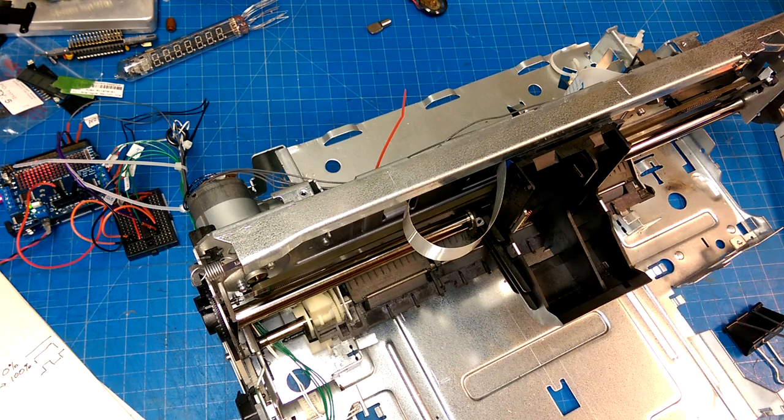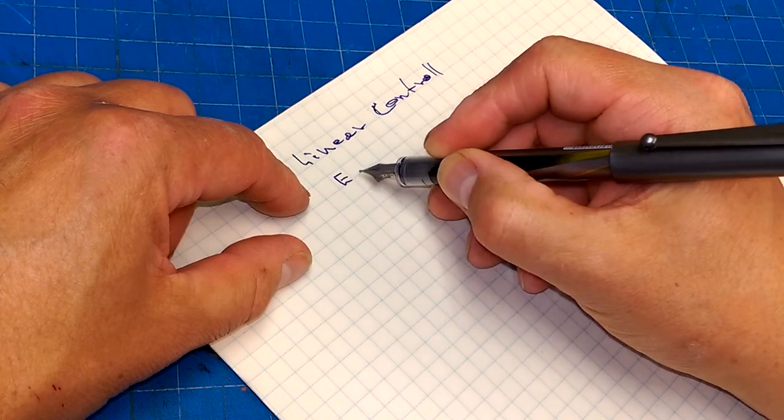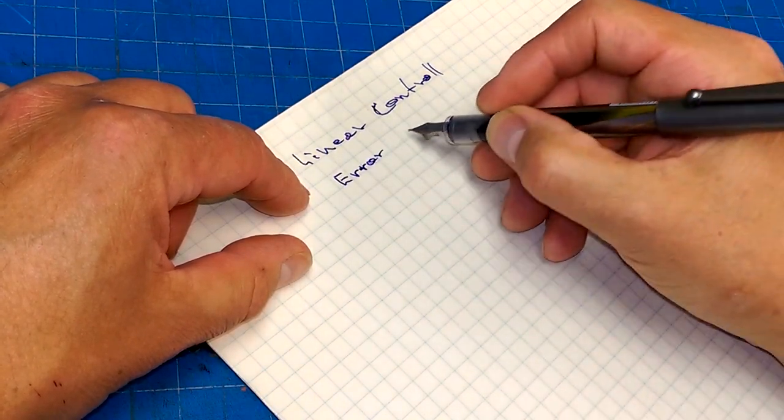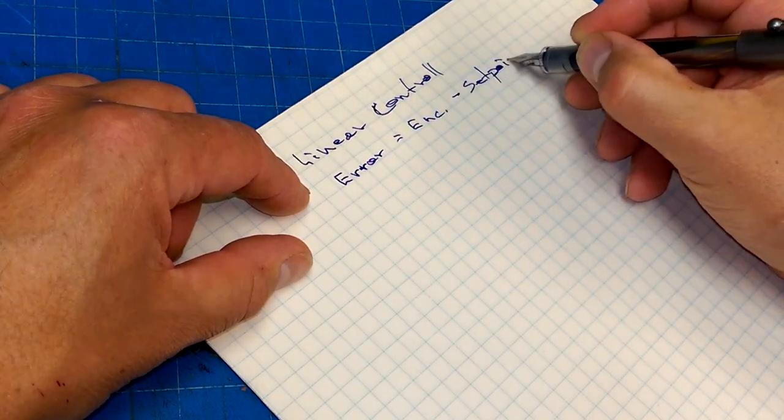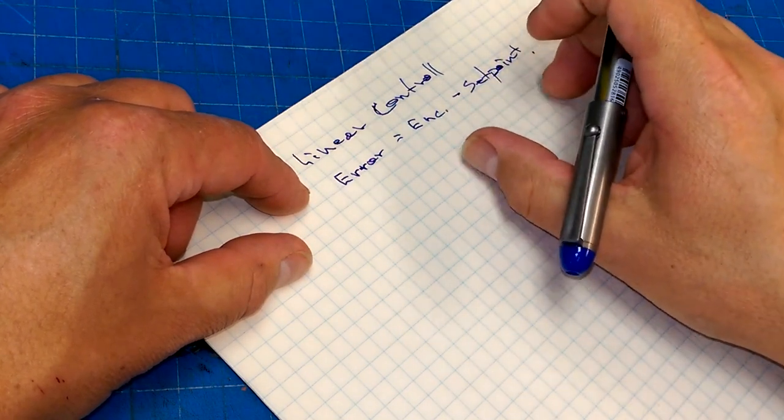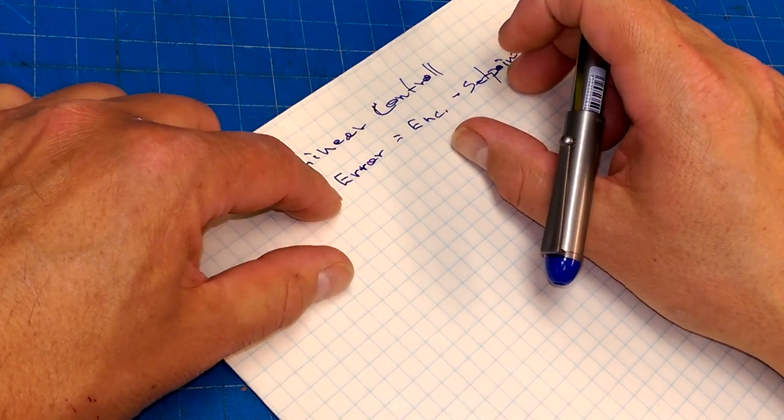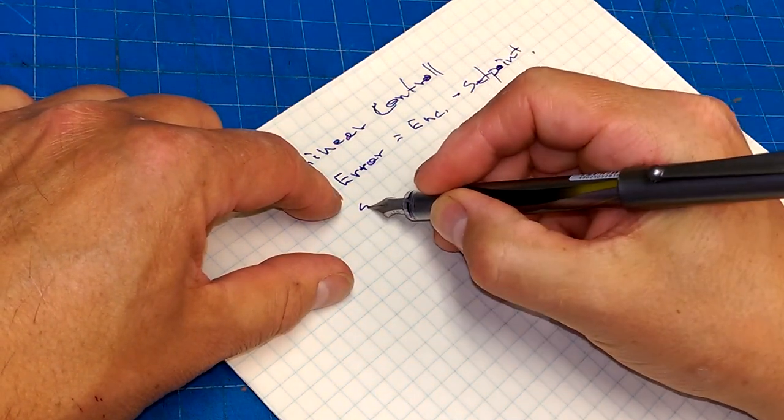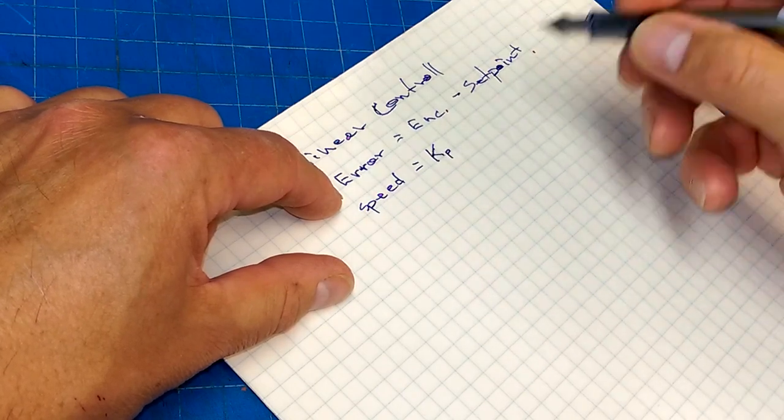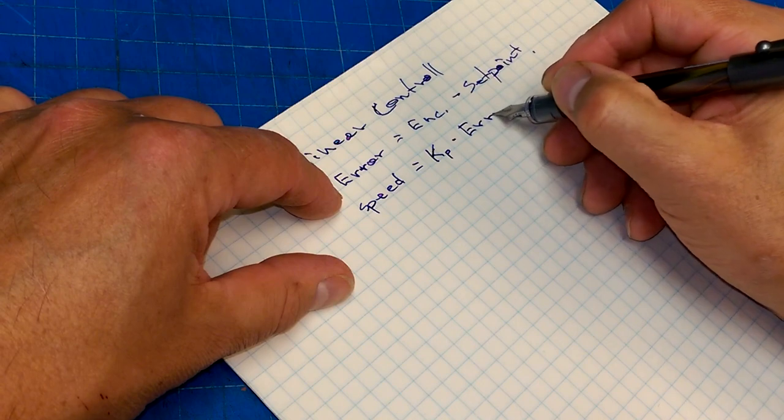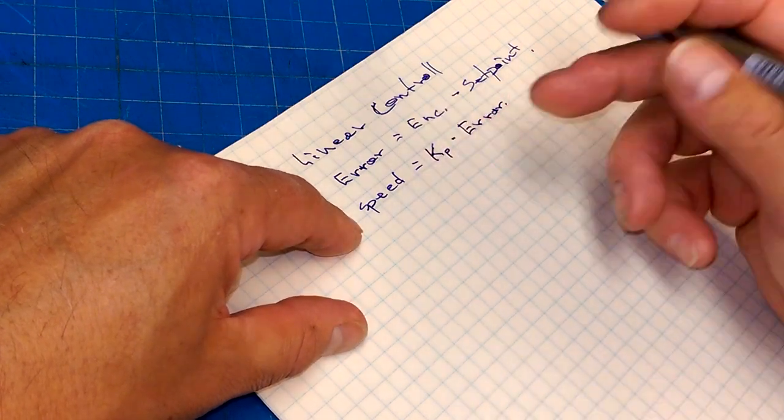And we'll look at that next. Okay, linear control. So in linear control what you're taking a look at is you're taking a look at your current error, which is the difference between your current encoder position and the set point. So what that does is it gives us an indication of how far away from our set point we are. Then what you're going to do is you're going to set your speed to be proportional to that error. So the speed is going to be equal to some constant Kp times our error term.